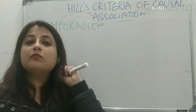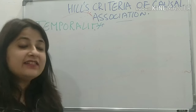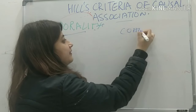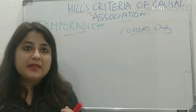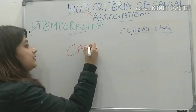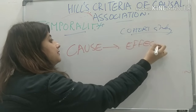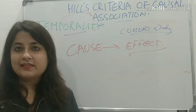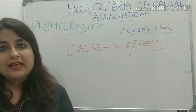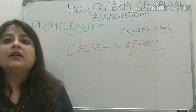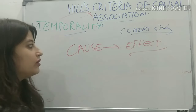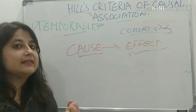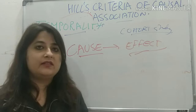The first and most important criterion is temporality, which we also studied in cohort study. Temporality simply means the cause should precede the effect. If someone is getting lung cancer, he or she must have had smoking as a risk factor beforehand — smoking should lead to lung cancer. This was best established by the cohort study design.